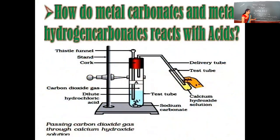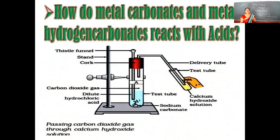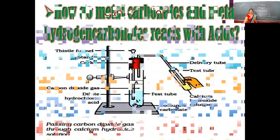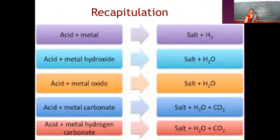In the reaction of acid with metal carbonate, carbon dioxide gas is released. How do we detect that carbon dioxide gas? When we pass the carbon dioxide gas into lime water — that is calcium hydroxide solution — it turns milky due to the formation of calcium carbonate.